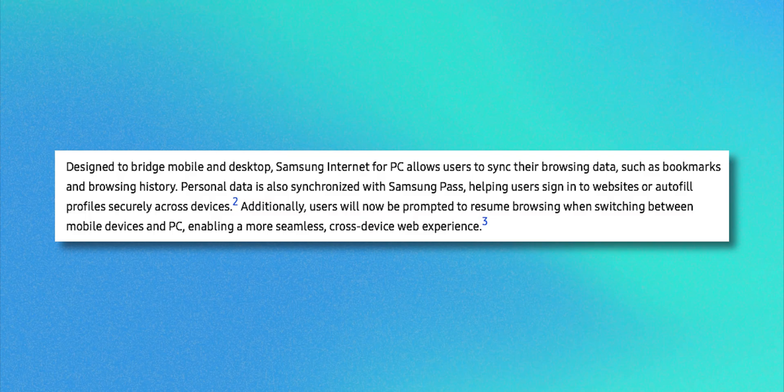Samsung Internet for PC allows users to sync their browsing data such as bookmarks and browsing history. Personal data is also synchronized with Samsung Pass, helping users sign into websites or autofill profiles securely across devices. Additionally, users will now be prompted to resume browsing when switching between mobile devices and PC.